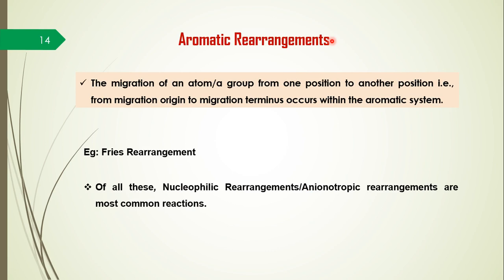Another type is aromatic rearrangements, where the migration of an atom or group from one position to another — from migration origin to migration terminus — occurs within the aromatic system. The Fries rearrangement is a best example. Of all these types, nucleophilic or anionotropic rearrangements are the most common reactions.